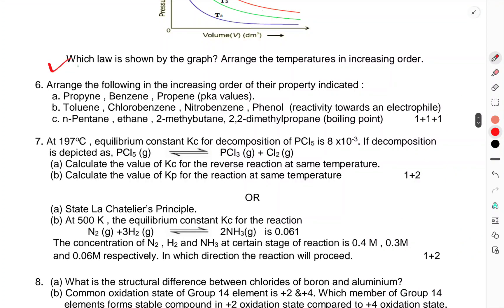Which law is shown by the graph? Arrange the temperatures in increasing order. Arrange the following in increasing order of their property: propane, benzene, propene, toluene, chlorobenzene, nitrobenzene, phenol, n-pentane, ethane, n-methylbutane, 2,2-dimethylpropane.